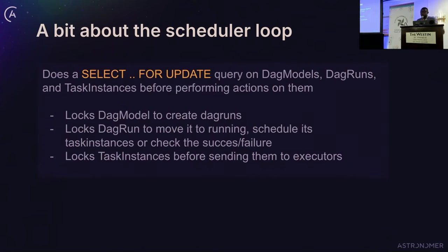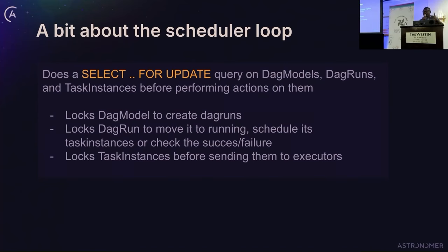Before going further, let's discuss some important things the scheduler loop does. The scheduler locks down objects before working on them — this is because of HA, so one scheduler works on a particular object and the other scheduler cannot. It uses SELECT FOR UPDATE to lock DAG models, create DAG runs, examine them, put task instances to scheduled state or queue them, and also lock tasks before sending them to executors — all to prevent conflicts between two schedulers.